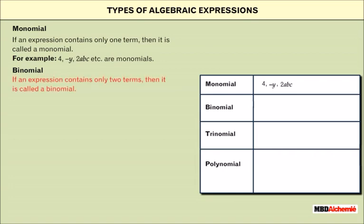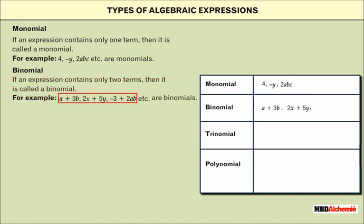Binomial: If an expression contains only two terms, then it is called a binomial. For example, a plus 3b, 2x plus 5y, minus 3 plus 2ab, etc., are binomials.